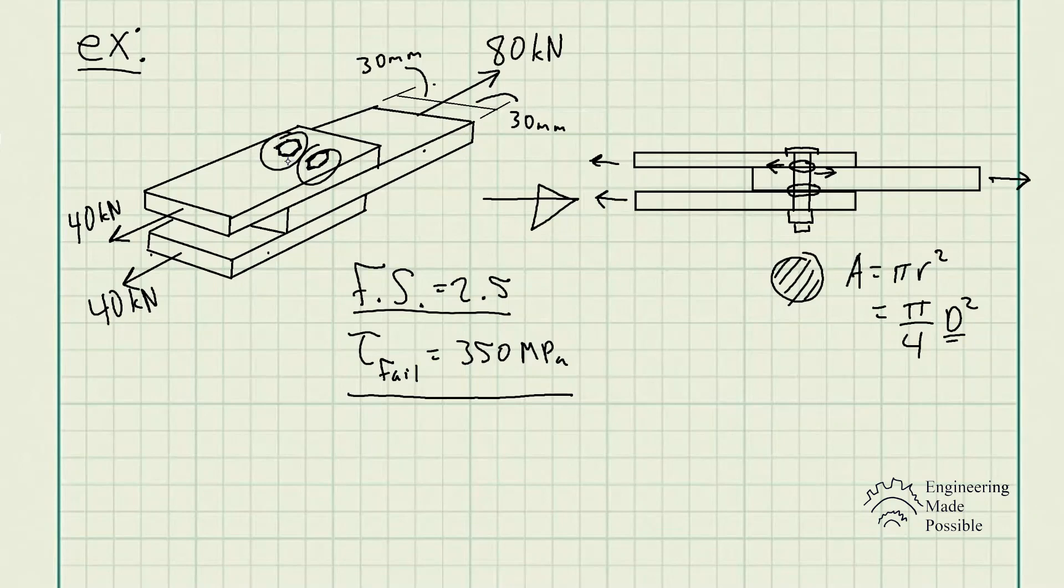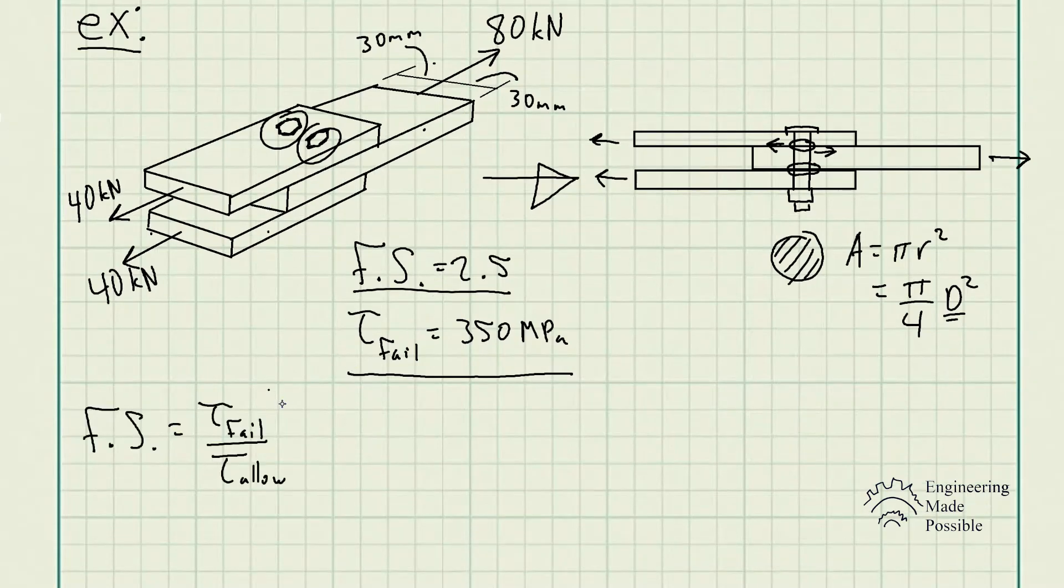In total, we have four shear planes. Think of it like adding the cross-sectional areas times four.